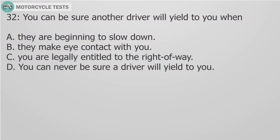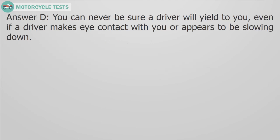Question 32. You can be sure another driver will yield to you when: A. They are beginning to slow down. B. They make eye contact with you. C. You are legally entitled to the right of way. D. You can never be sure a driver will yield to you. Answer D. You can never be sure a driver will yield to you, even if a driver makes eye contact with you or appears to be slowing down.